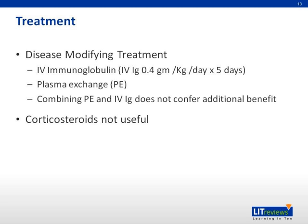For acute disease-modifying treatment, intravenous immunoglobulin, abbreviated as IVIG, and plasmapheresis are equally effective. IVIG is the preferred treatment due to ease of administration and good safety record. It should be given at a total dose of 2 grams per kilogram body weight, equally divided in five daily doses. Combination of IVIG and plasma exchange has not been shown to confer additional benefit.